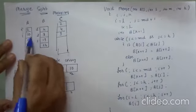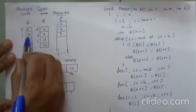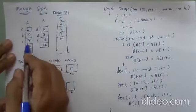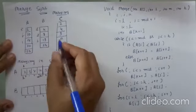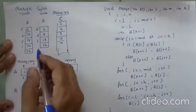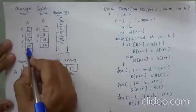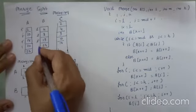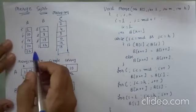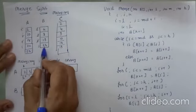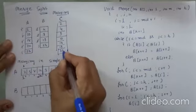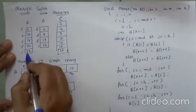Now compare I and J: 10 and 19 — 10 is smaller, so 10 is copied and I is incremented. Then 18 and 19 — 18 is smaller, so 18 is copied and I is incremented. Compare 19 and 20 — 19 is smaller, so 19 is copied and I is incremented.